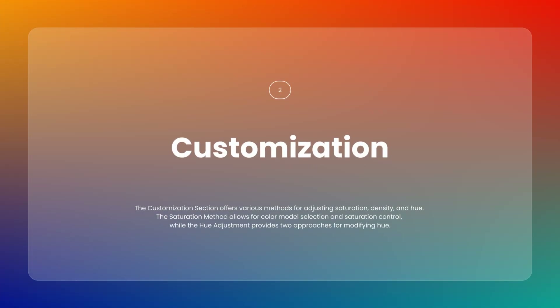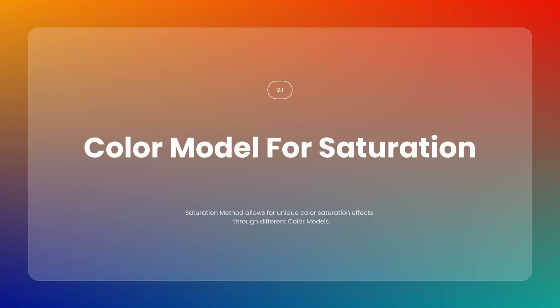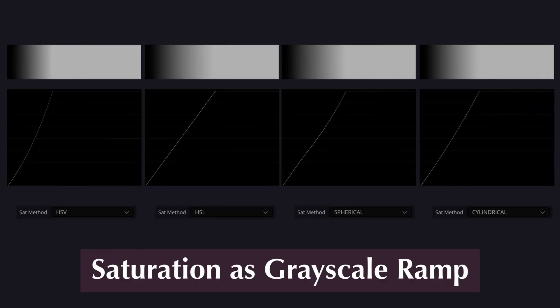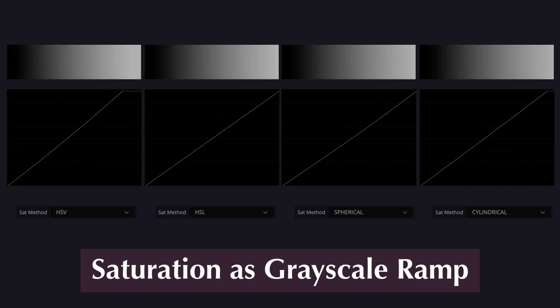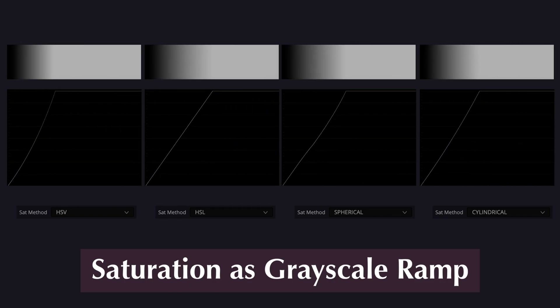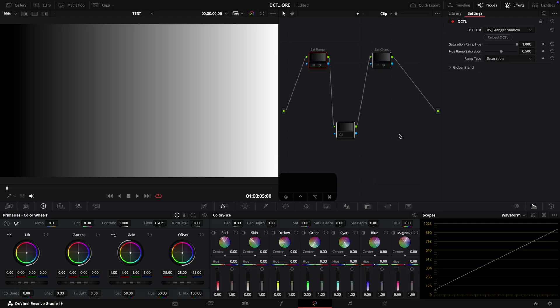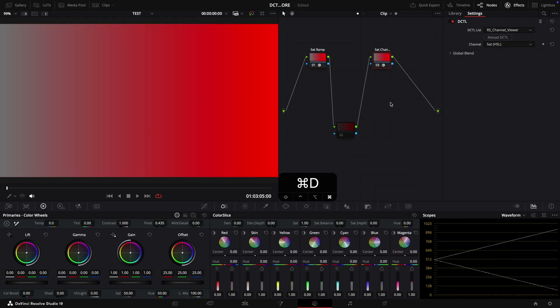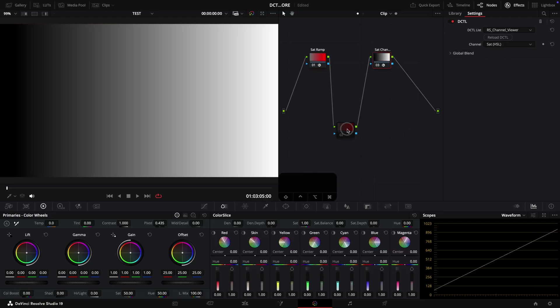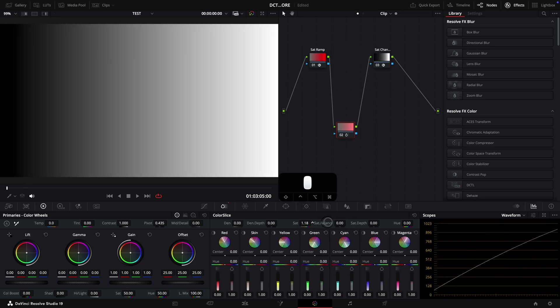Now let's move on to the Customization section. The first one is Saturation Method, where you can choose between different color models which affect saturation in a unique way. As shown in this demo, saturation is visualized as a gradient ramp, which you can easily create by viewing only the saturation channel.